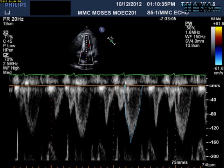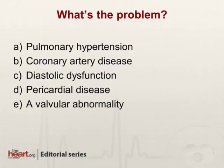This is a pulse wave Doppler through the left ventricular outflow tract. So, why is my patient short of breath when he exerts himself? Do you think he has pulmonary hypertension? Do you think this is an occult manifestation of coronary artery disease? Is he short of breath with exertion because of a diastolic abnormality of the left ventricle? Does he have pericardial disease? Or is this some sort of a valve problem?